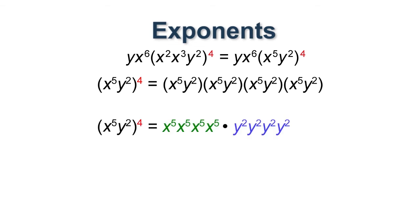Now we can see that we have four x to the fifths here. We can add up all the exponents to get a total of 20 x's. And similarly, we get eight y's.